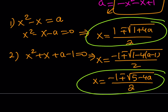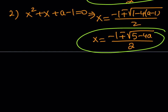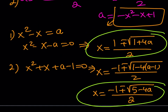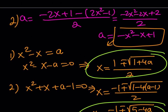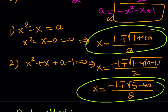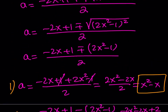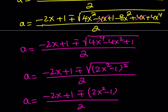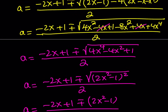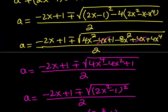Remember I said I'd show you two methods — here's the second. The second method is different from the first approach. The first approach involved solving the equation for a first, then turning it into an equation in x. Our second method is going to involve something else.